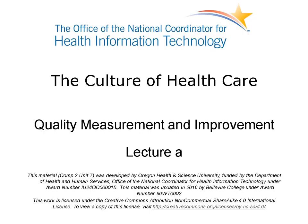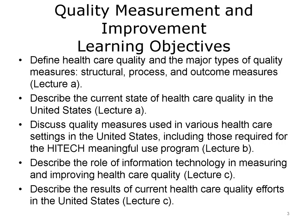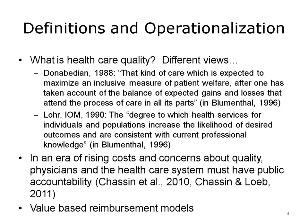It discusses how care is organized within a practice setting, privacy laws, and professional and ethical issues encountered in the workplace. The objectives for quality measurement and improvement are to define health care quality and the major types of quality measures — structural, process, and outcome measures — describe the current state of health care quality in the United States, discuss quality measures used in various health care settings, including those required for the HITECH Act Meaningful Use Program, describe the role of information technology in measuring and improving health care quality, and describe the results of current health care quality efforts in the United States.